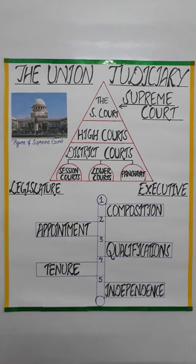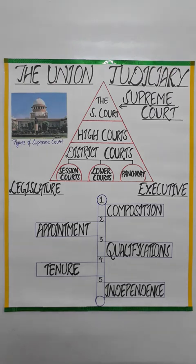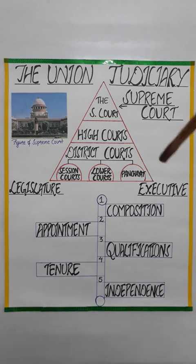According to the Constitution, the Government of India is constituted of three organs: the Legislature, the Executive, and the Judiciary. The first organ, the Legislature, consists of the Parliament — that is the Lok Sabha and the Rajya Sabha — and the state legislature, and its main function is to make the laws. The second organ, the Executive, consists of the Council of Ministers and the officials of ministries, both at the union and state level, and its main function is to enforce the laws.